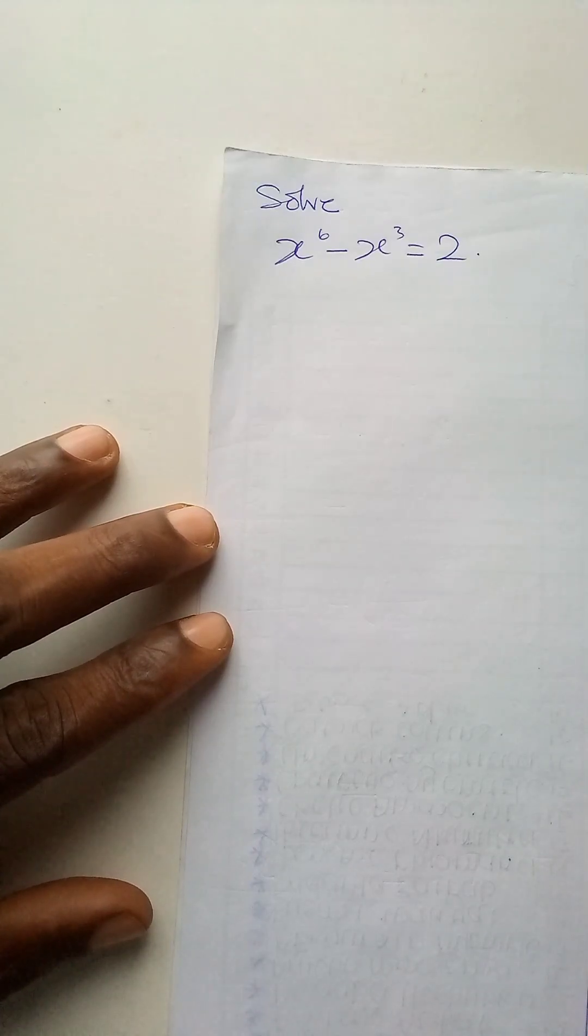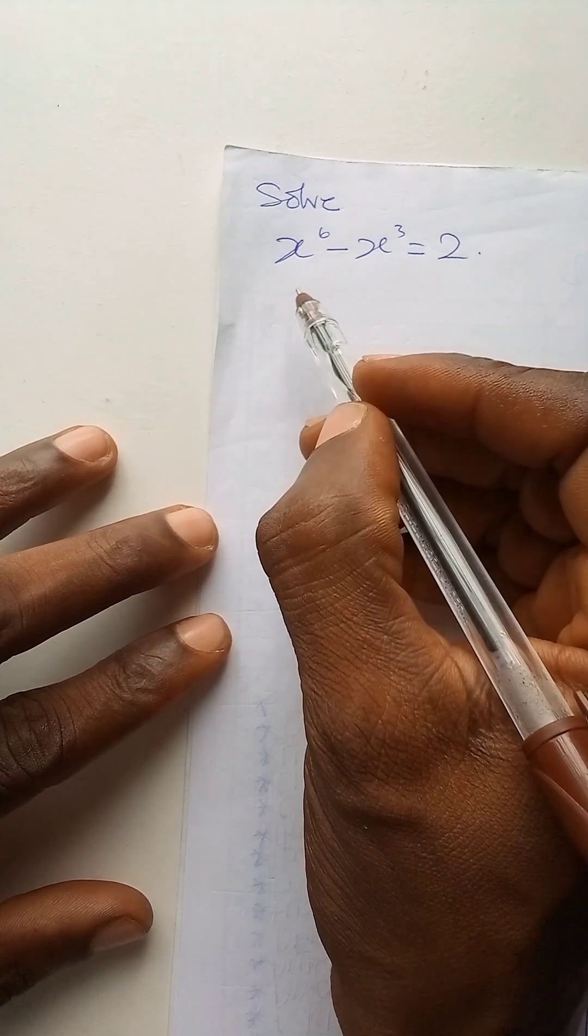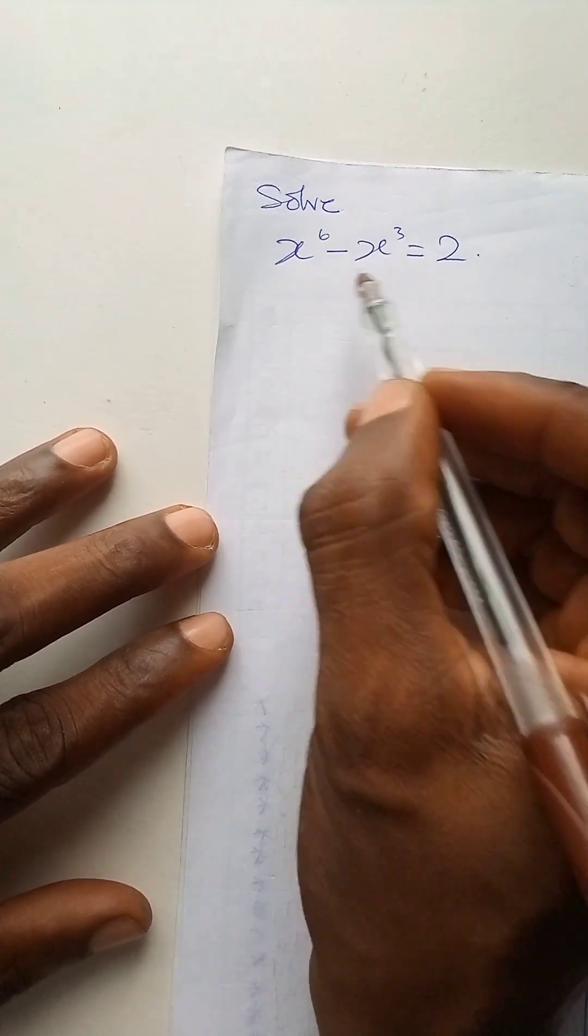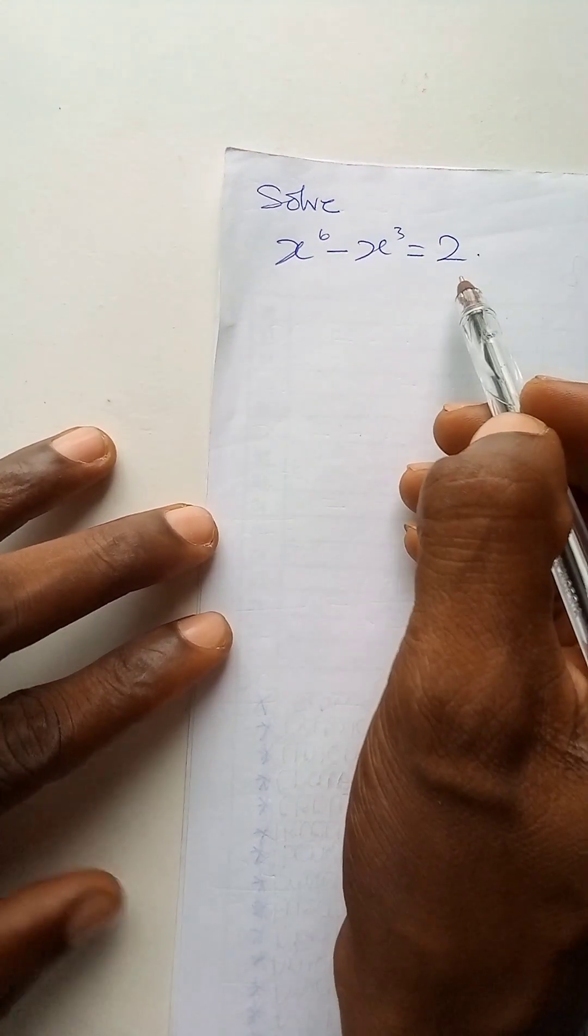Welcome to this video. We shall be looking for the value of x given that x to power 6 minus x to power 3 is equal to 2.